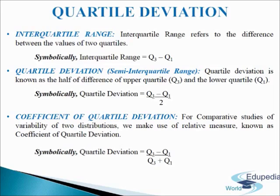Next, we come to quartile deviation, that is semi-interquartile range. Quartile deviation is known as the half of the difference of upper quartile Q3 and the lower quartile Q1. It is half of the interquartile range, that is the range among the quartiles. So it is also known as the semi-interquartile range. Symbolically, it is written as: quartile deviation equals Q3 minus Q1 divided by 2.